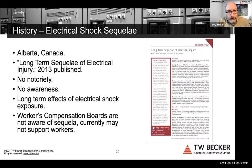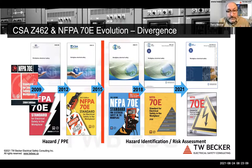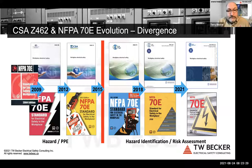The evolution of Z462 and 70E is showing some divergence in the 2021 editions. I have a changes and updates document for Z462 and can discuss the differences between the two standards. Both have made a big difference — Z462 in Canada and 70E internationally. There really is no other document like NFPA 70E, which is why Canada adopted it, though we've added annexes and there are some clause-level differences. The core technical requirements are largely aligned.